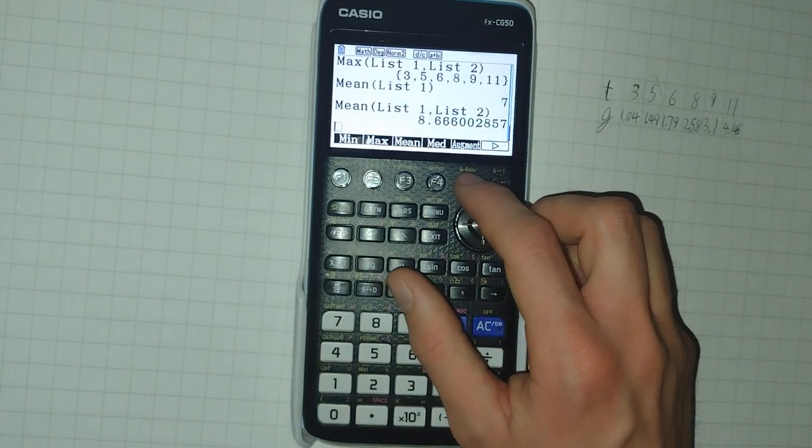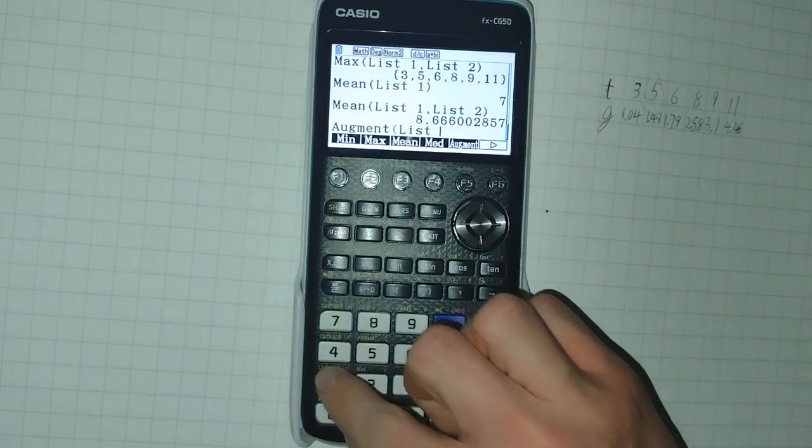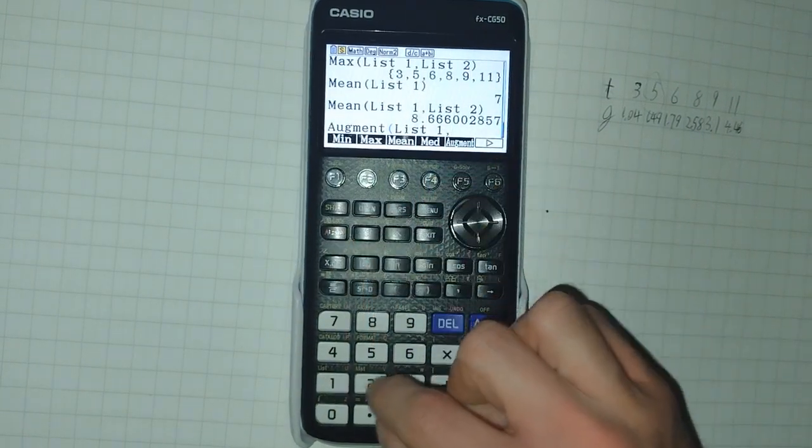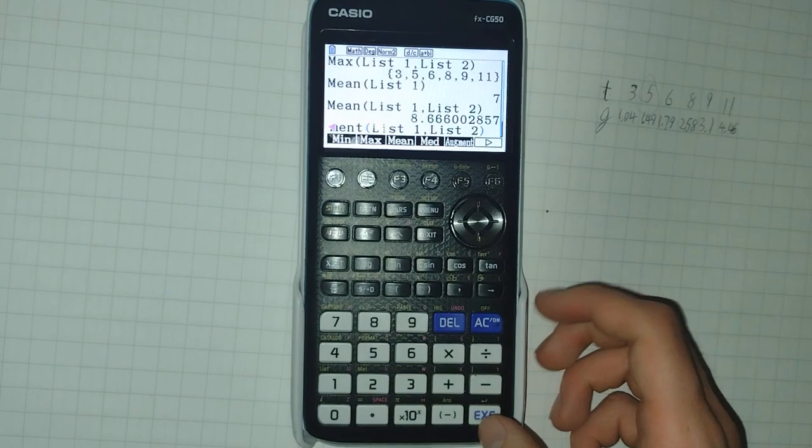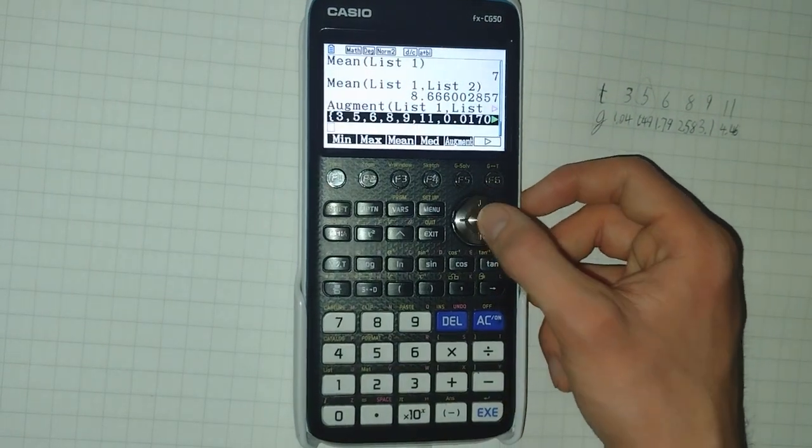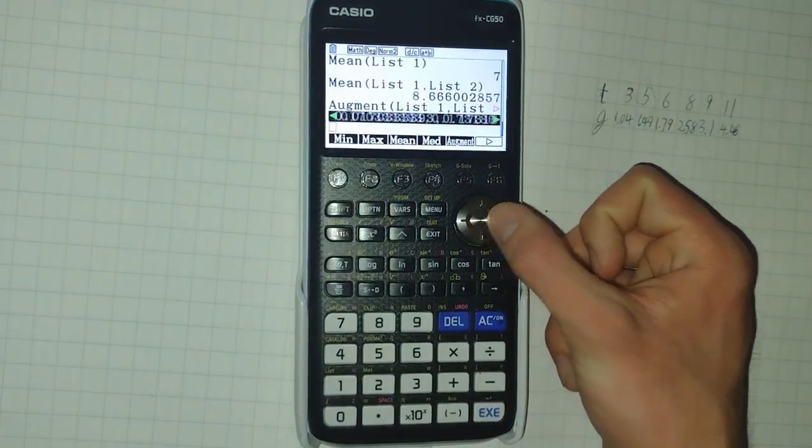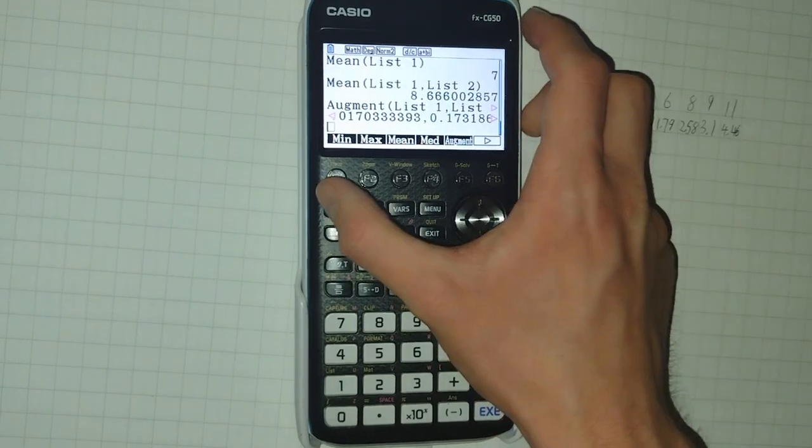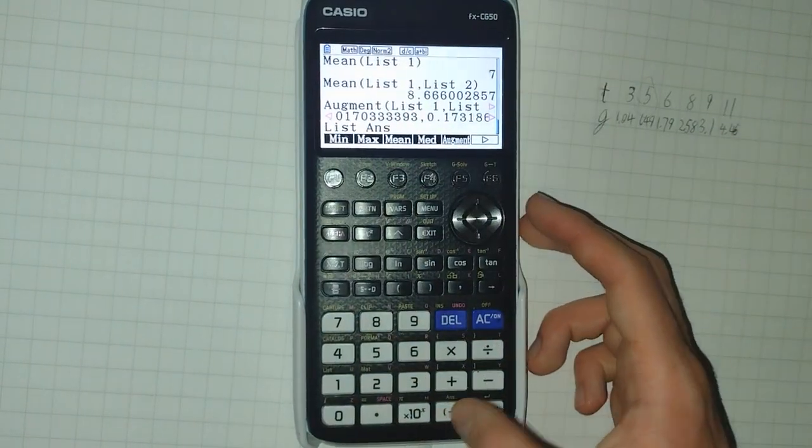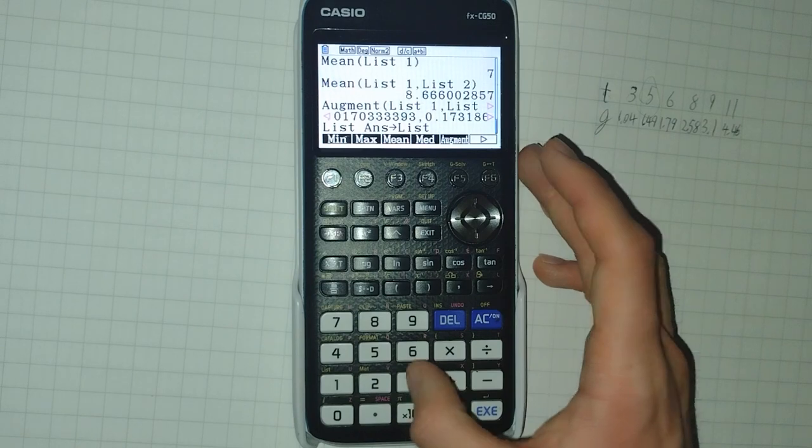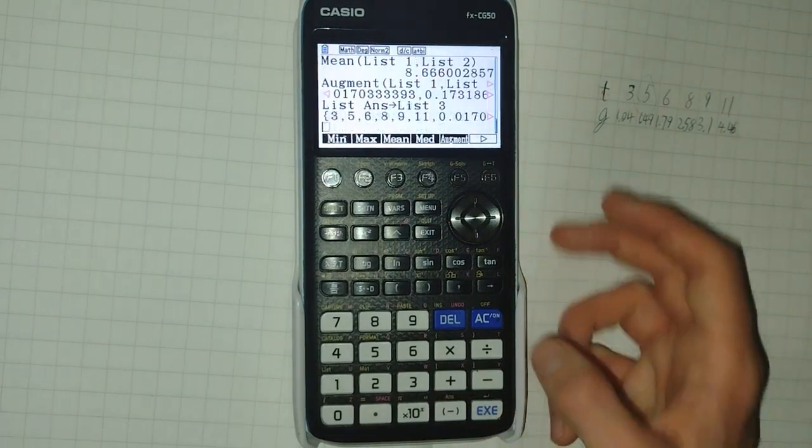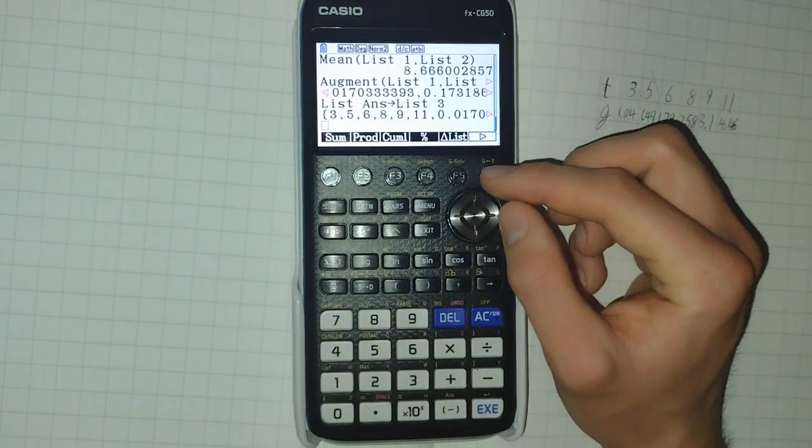You can also augment a list. And this means to join two lists together. I'll do this with lists one and two. And I get this new list which I will assign back into list three. So I can work with it later.